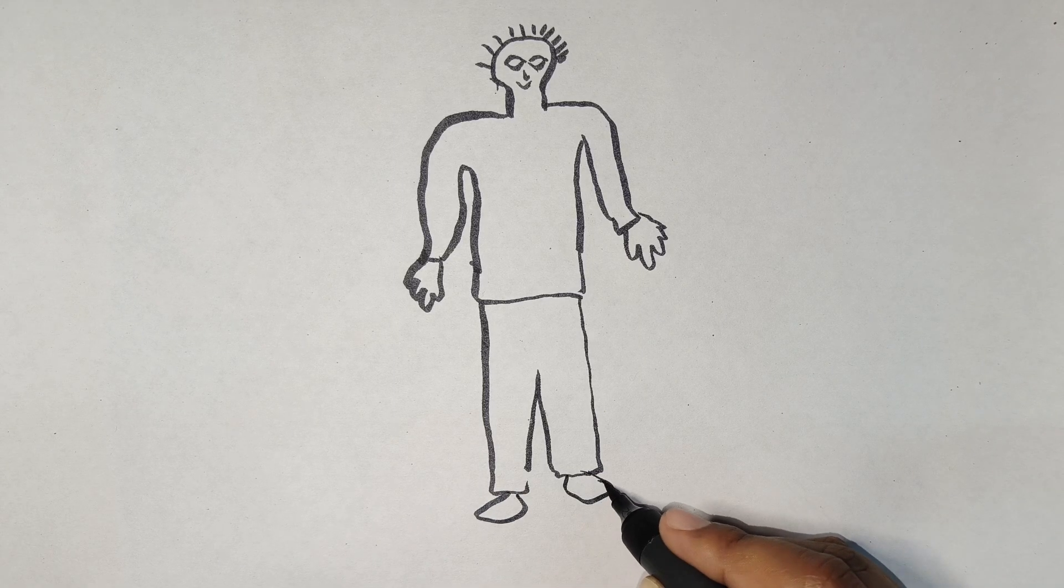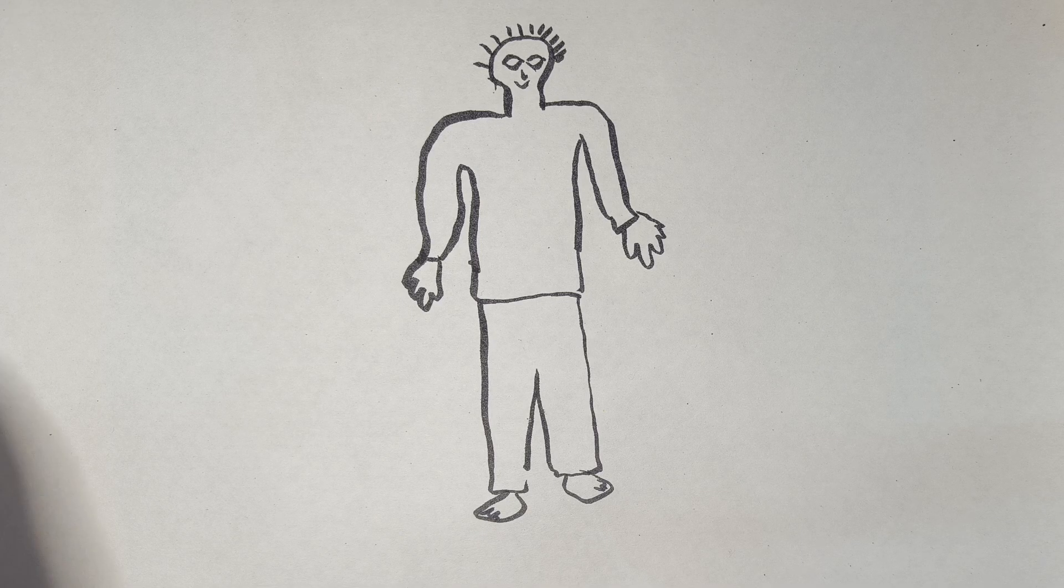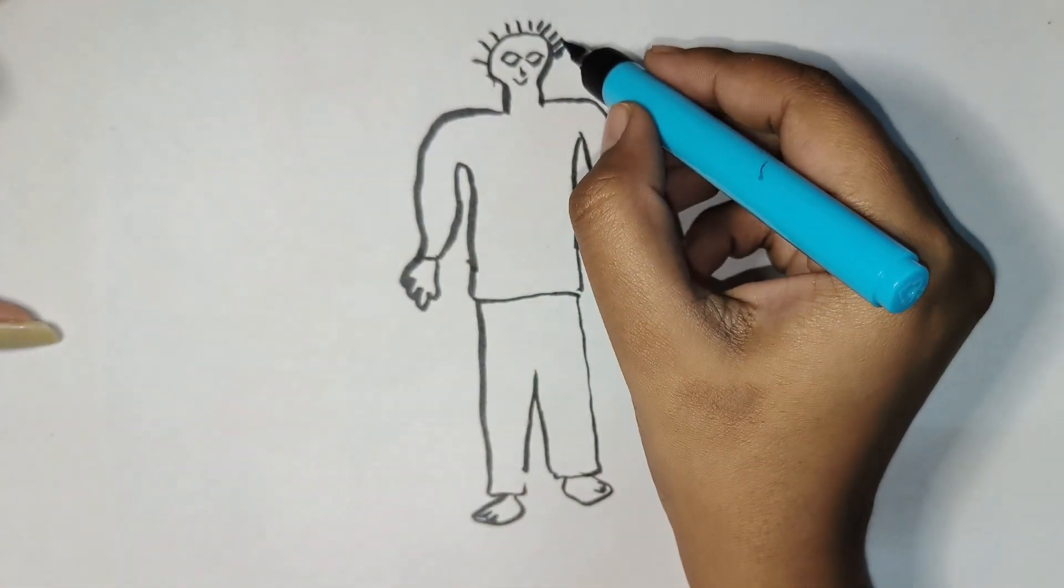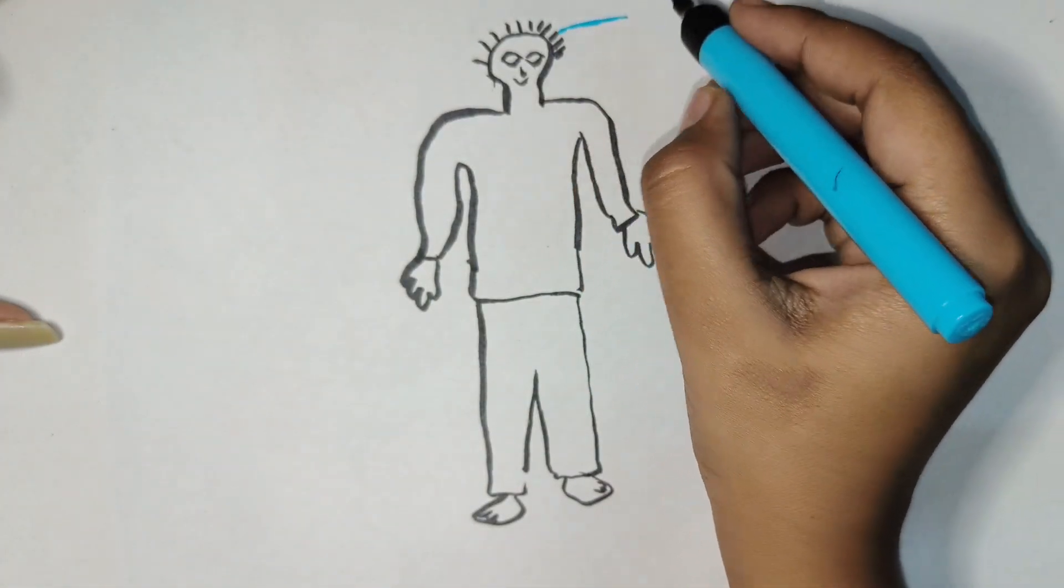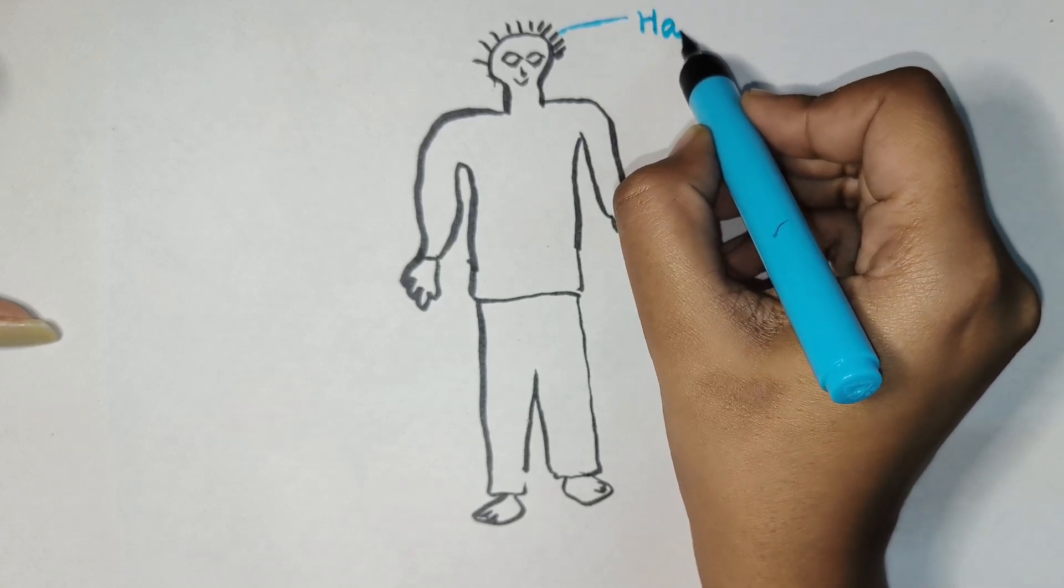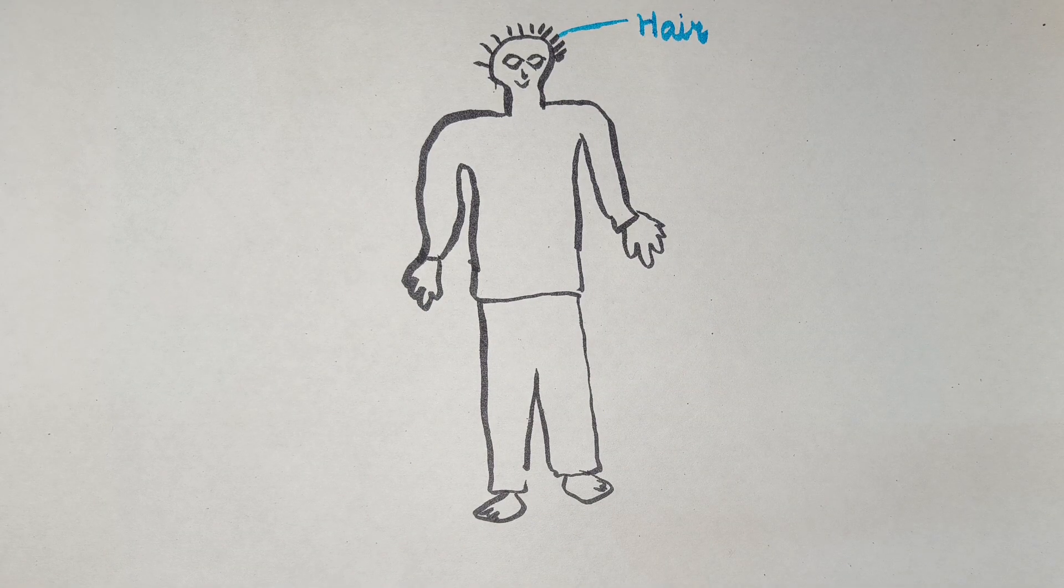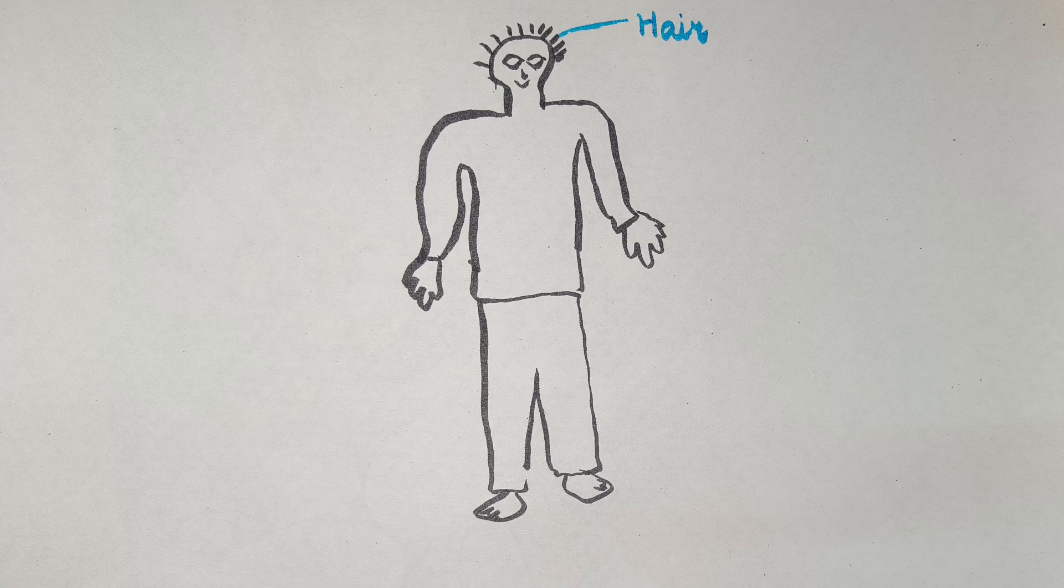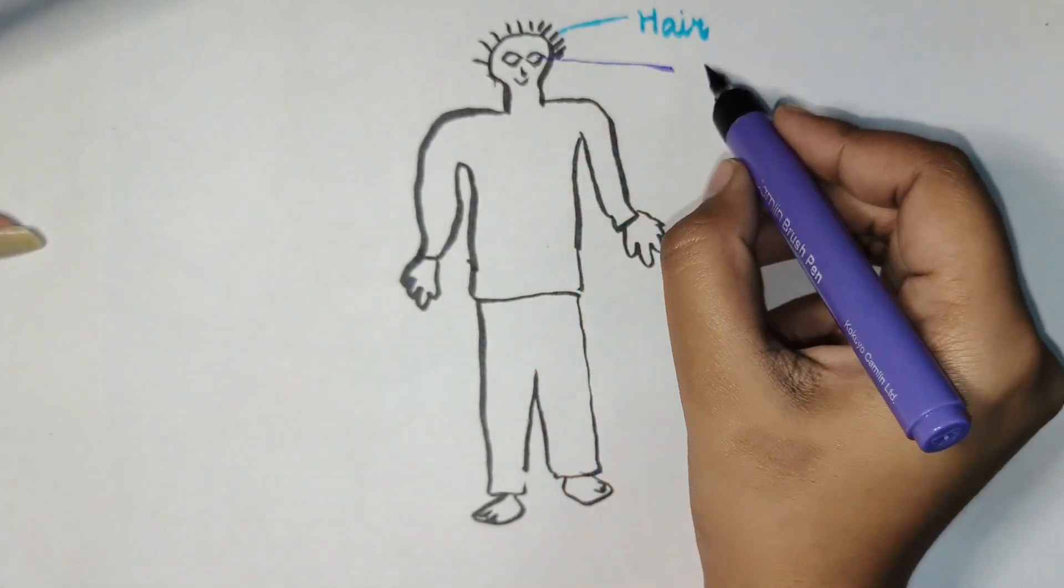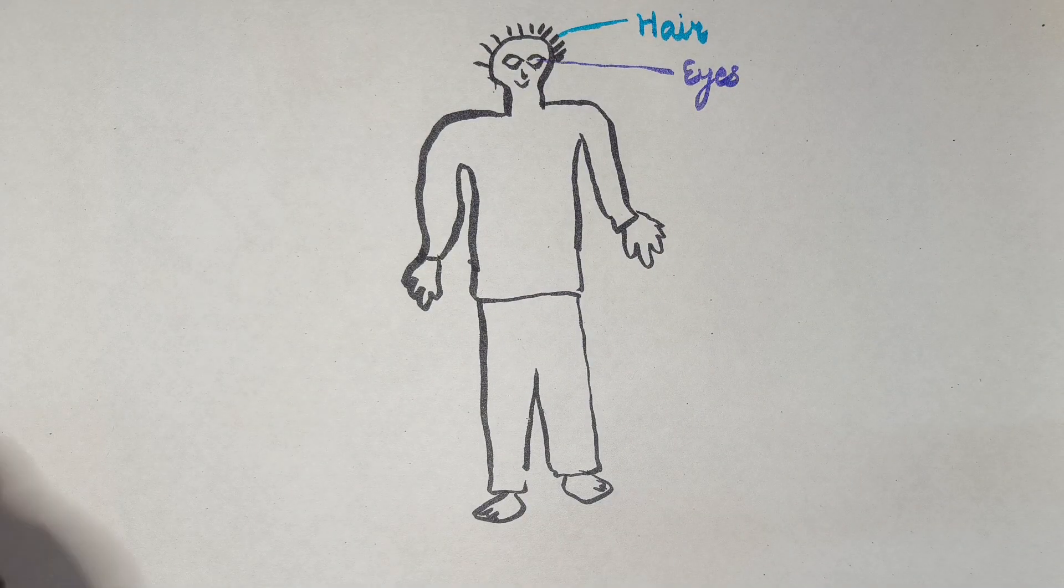Like this. This is a man's body structure. So first what is this? This is hair. H-A-I-R, hair. Number two, number two is what is this? Eyes. This is eyes.